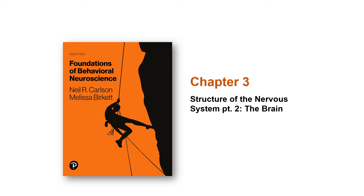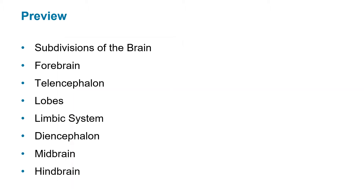Hello and welcome to another exciting lecture for behavioral neuroscience. This is part two of the structure of the nervous system, and we're going to talk all about the brain. We'll cover the subdivisions of the brain, transitioning to the forebrain, the telencephalon, the lobes of the brain, the limbic system, the diencephalon, the midbrain, and finally finishing with the hindbrain.